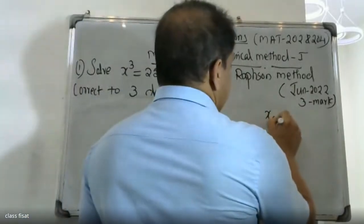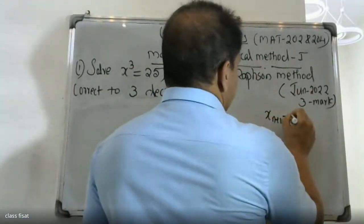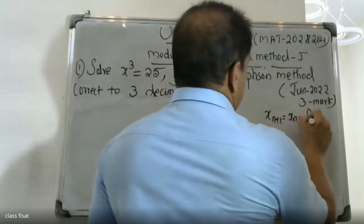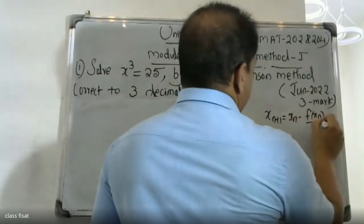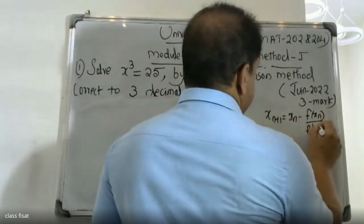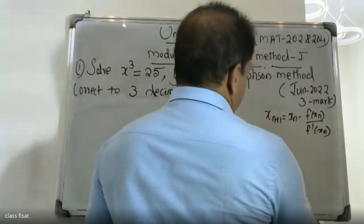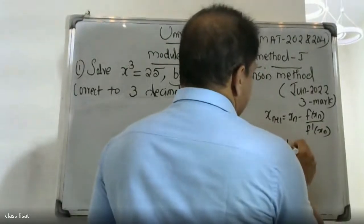The Newton-Raphson formula is: xₙ₊₁ = xₙ minus f(xₙ) divided by f dash xₙ, where f dash xₙ is the derivative evaluated at xₙ.